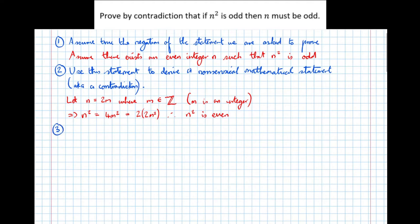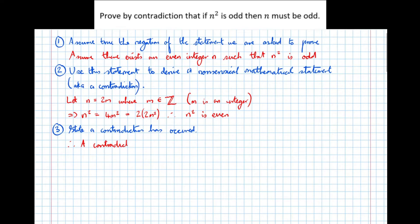Step three: state that a contradiction has occurred. We found that n squared is even, not odd — therefore a contradiction to our assumption that n squared is odd.